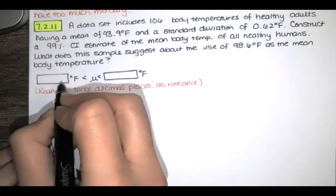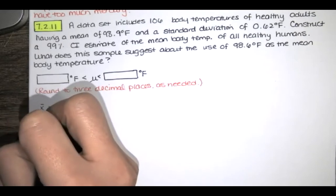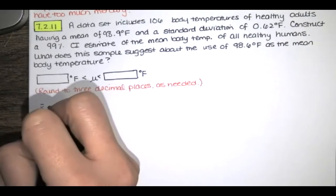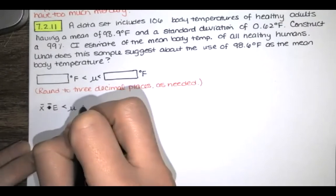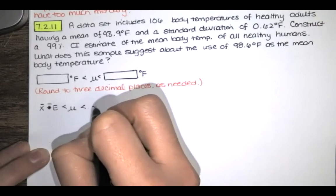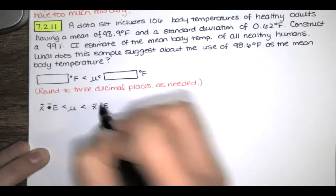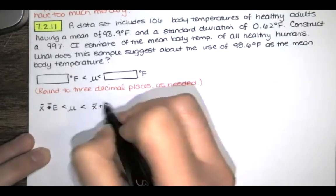we're going to find these bounds in this way. It's given by x̄ minus the error is less than the true population mean μ, which is less than x̄ plus the error. So I need x̄ minus the error and x̄ plus the error here,